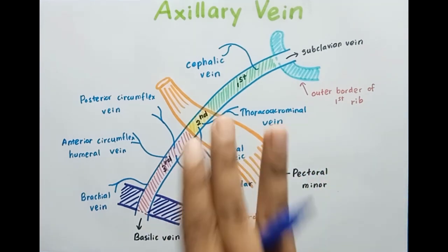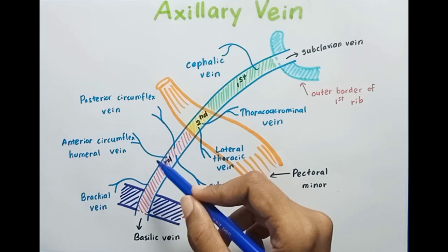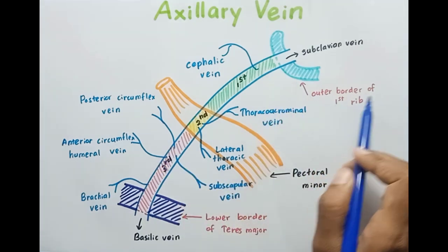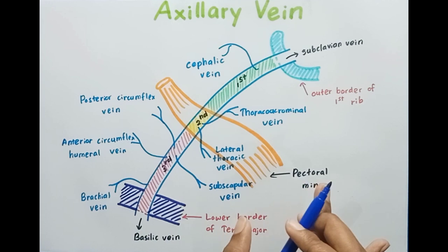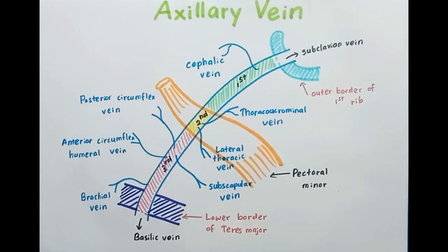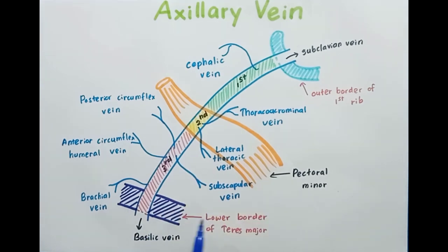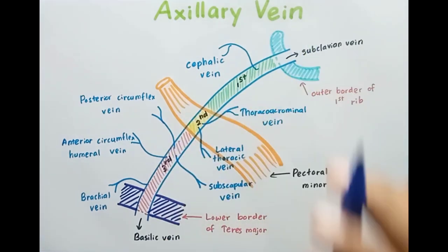To summarize: there are three parts of the axillary vein. The first part is from the outer border of the first rib to the medial border of pectoralis minor. The second part is the area behind the pectoralis minor muscle. The third part is from there to the lower border of teres major. Most of the veins correspond to the axillary artery.